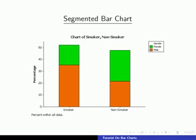The bar for non-smoker goes up to 47.78% and is split in two, where the orange represents 21.67% for males and the green represents 26.11% for females. The four percentage values represented in this graph are the four centre values of our relative frequency contingency table, so this graph also shows the joint distribution of smoking status and gender.